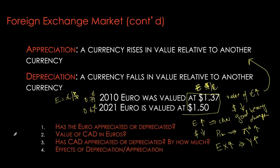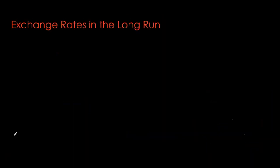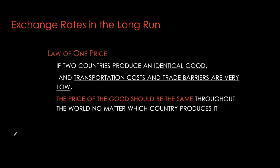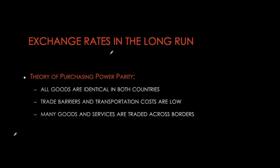That brings us to our next question: how are these exchange rates determined? One of the most important theories of exchange rate determination is purchasing power parity, or PPP. PPP itself is based on the law of one price. The law of one price says that if two goods are identical, produced in two different countries, but with very low transportation costs and no trade barriers — no quotas, no tariffs — then the price of the good should be exactly the same across the globe. We can extend the law of one price to a whole market basket, which gives us purchasing power parity: if two identical market baskets have no trade barriers and very low transportation costs, their prices across national boundaries will be exactly the same.